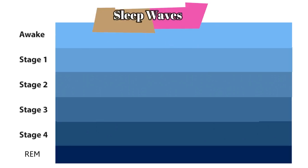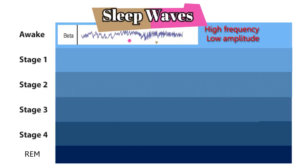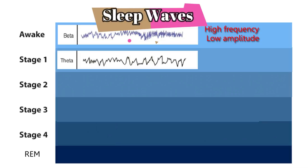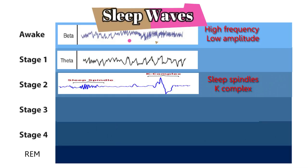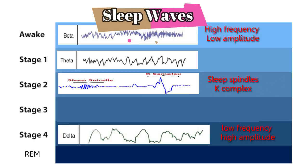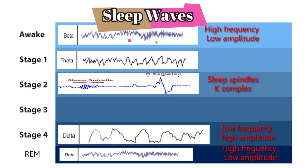Using an EEG we can record the sleep waves, or brain activity, during sleep. When you're awake you have beta waves, which have high frequency and low amplitude. In stage one you have theta waves. In stage two you have sleep spindles and K-complexes. Stage three doesn't have any significant waves. Stage four has delta waves, which have low frequency and high amplitude — this is the deepest stage of sleep. And REM sleep has beta waves again, with high frequency and low amplitude.